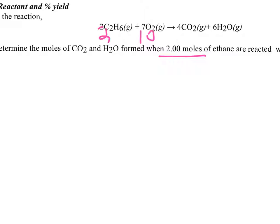I need to know which one is going to run out first — which is probably going to be the limiting reactant. You guys know about combustion, right? Oxygen tends to be in excess since it's floating around in the room. Usually your limiting reactant is going to be your fuel, but we have to verify that. So I'm going to show you the long way first, and then I'll show you the shortcut.